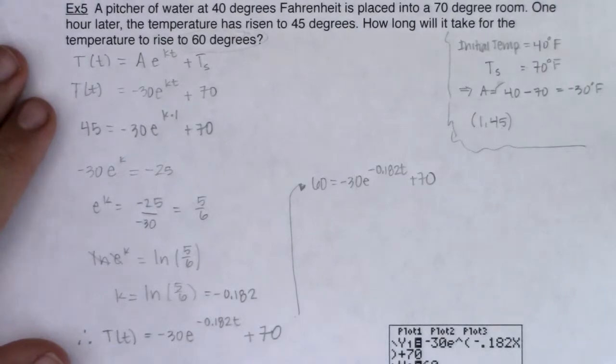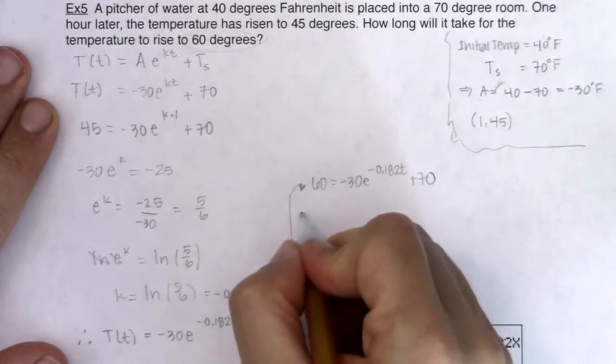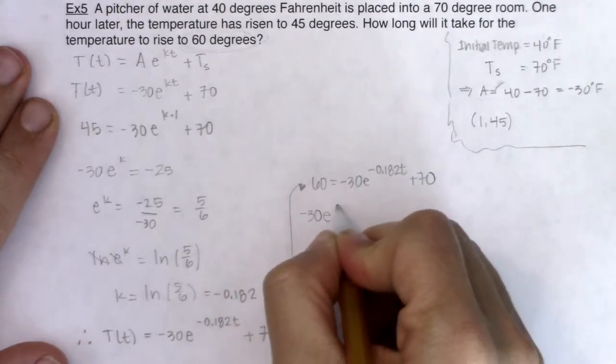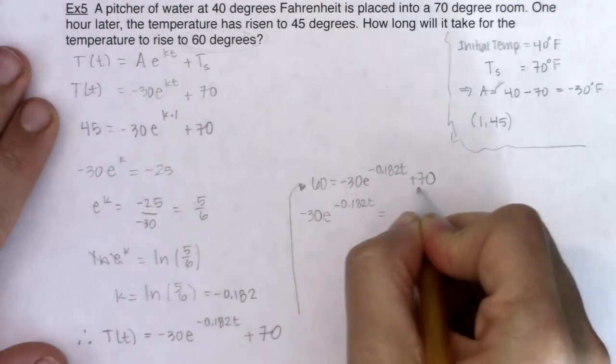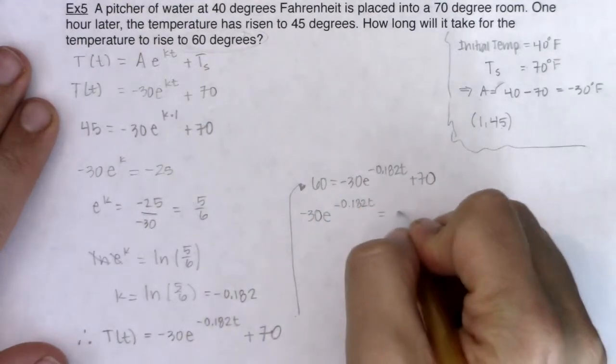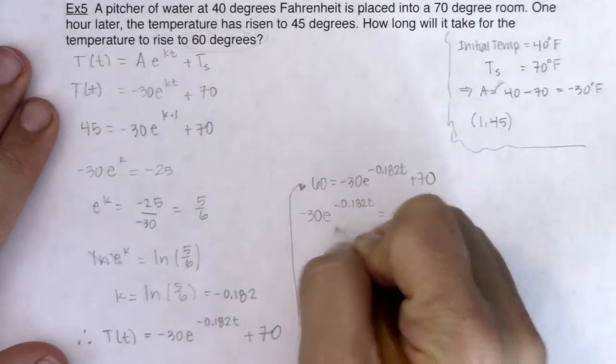I want to solve for little t. Fantastic. I got to get that exponential term isolated. So the first thing I'm going to do is subtract the 70 to the other side. So I've got negative 30e to the negative 0.182t equaling. 60 minus 70 is negative 10.